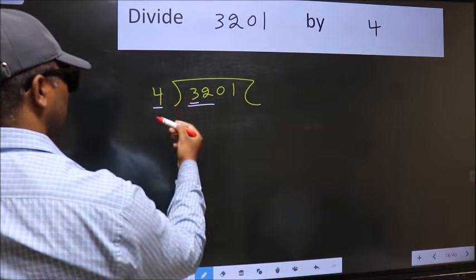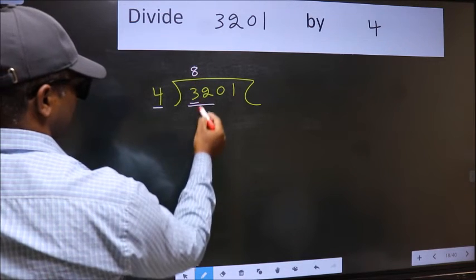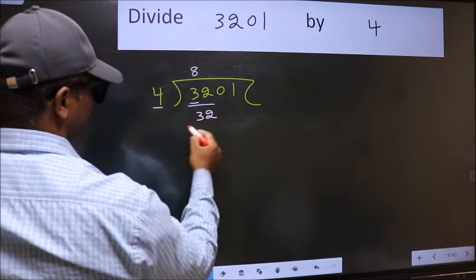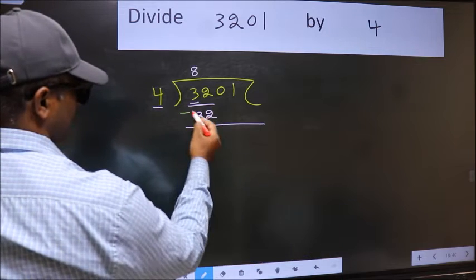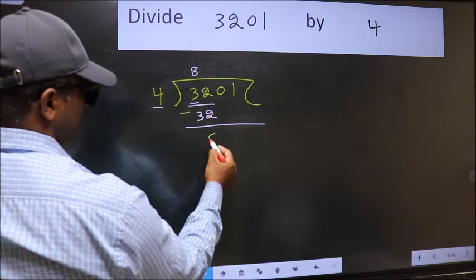When do we get 32 in 4 table? 4 eights, 32. Now, we should subtract. 32 minus 32, 0.